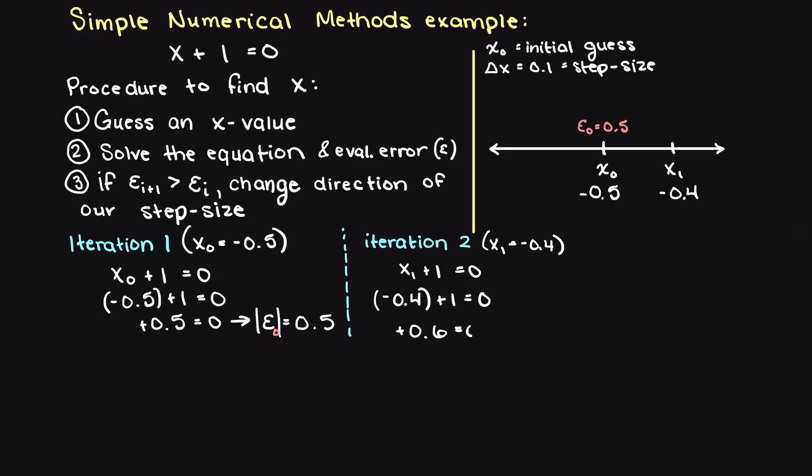Well nope, that didn't work. Our error got bigger as you can see, meaning that we moved away from our solution. Therefore, we could go back to minus 0.5 and move in the other direction.